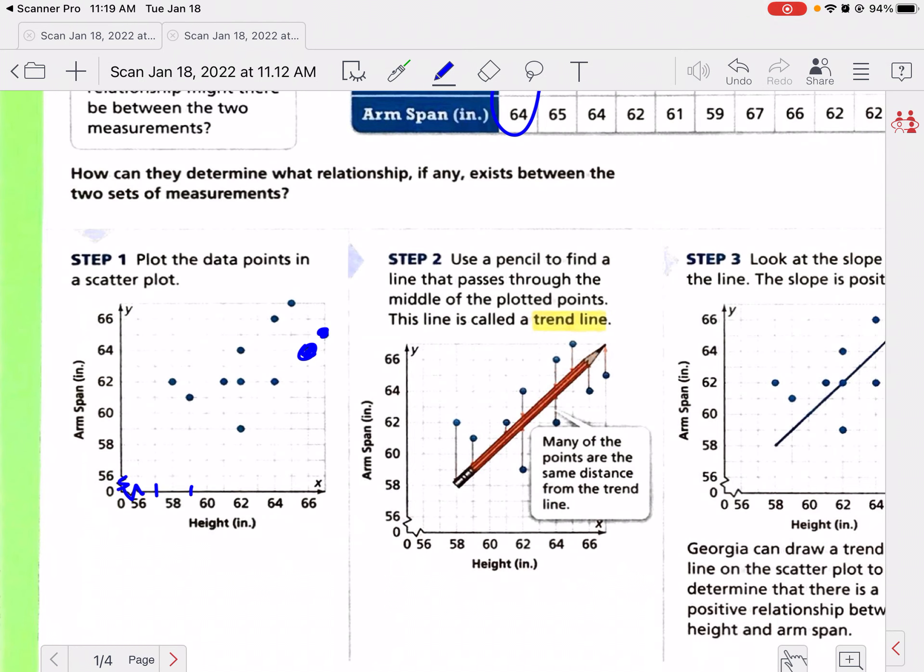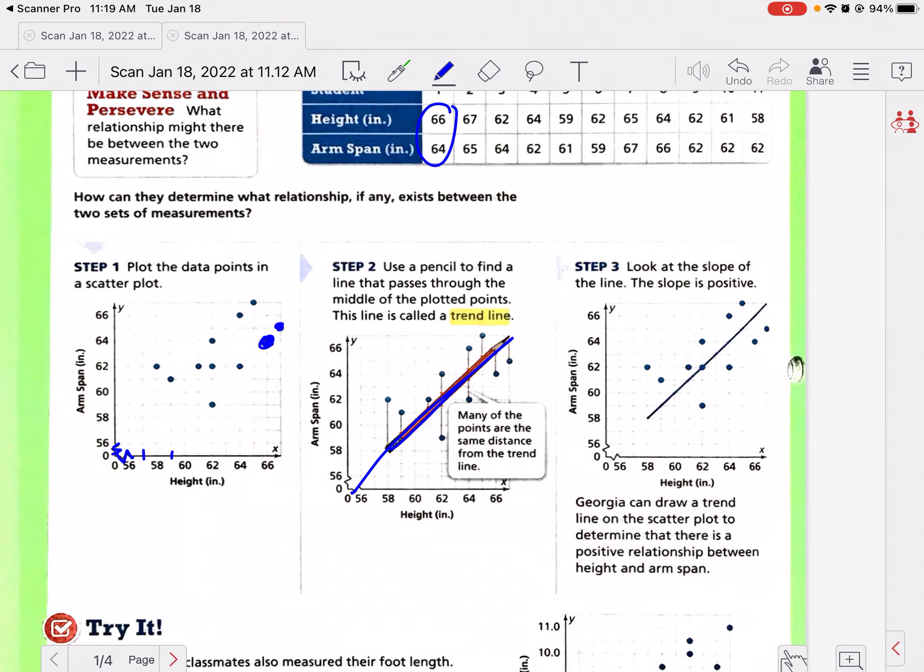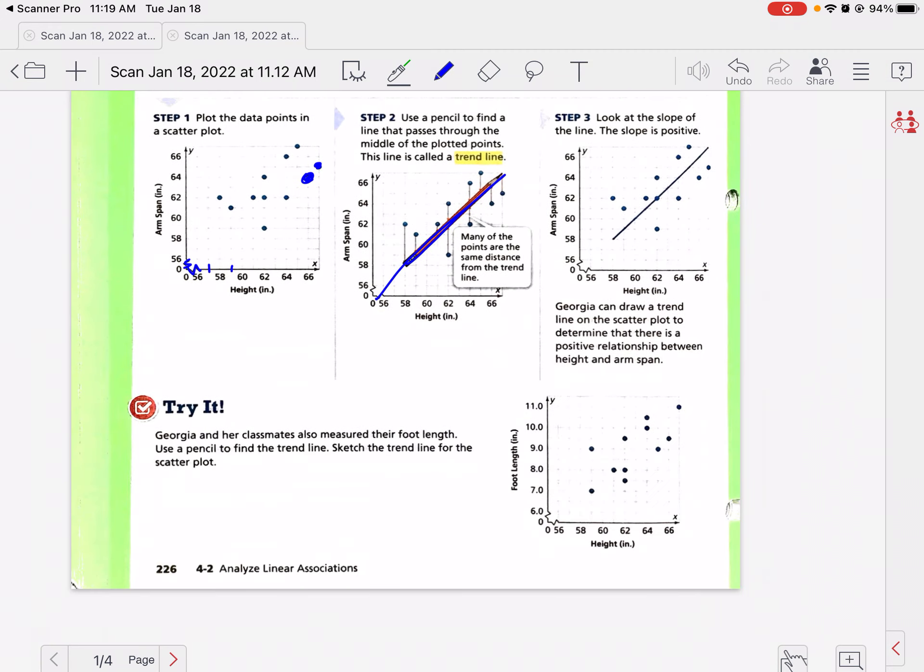Step two is we want to find a line, and it's called a trend line or line of best fit that kind of represents a lot of that data. They kind of just made a rough estimate line, and you can even extend it further. Then we're going to look at the slope of the line. This would be a positive slope because as we're reading it from left to right, it is going upwards. If it was going this way, it would be a negative slope. There's a positive relationship between height and arm span, so that means as your height goes up, your arm span also goes up. If there was a negative correlation or negative association, as one went down, the other would go up.